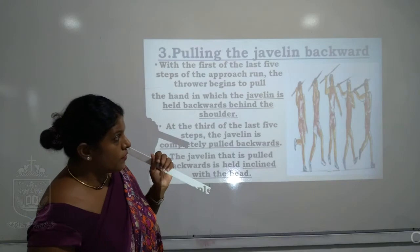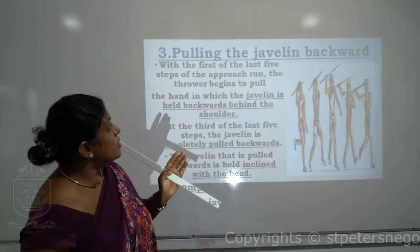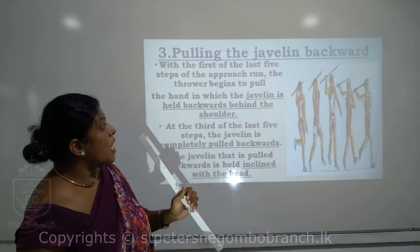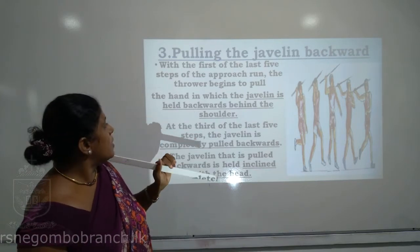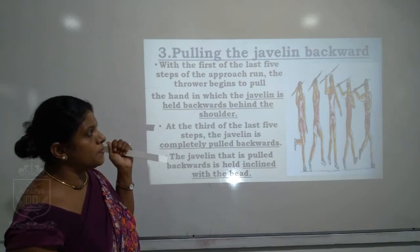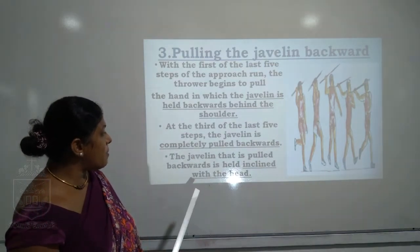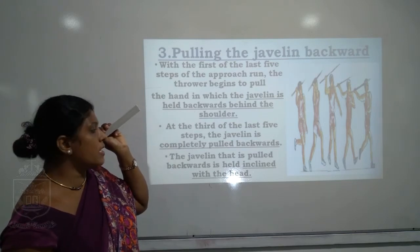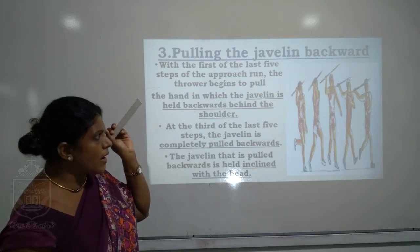Third: pulling the javelin backward. In the first of the last five steps of the approach run, the thrower begins to pull the hand holding the javelin backward, behind the shoulders. At the third of the last five steps, the javelin is completely pulled back. The javelin is held inclined at an angle with the head — not parallel to the ground.